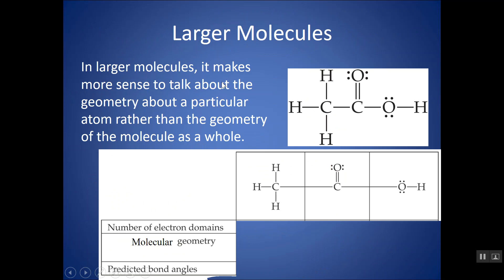For larger molecules, it makes more sense to talk about the geometry around a particular atom instead of the geometry of the whole thing. For this structure here, I can break it down and look at the geometry around this carbon, then separately look at the geometry around this carbon, then separately look at the geometry around this O. Take a moment and fill this out: tell me how many domains you have around the central atom, what would be the molecular geometry, and what would be the bond angles based on your chart.